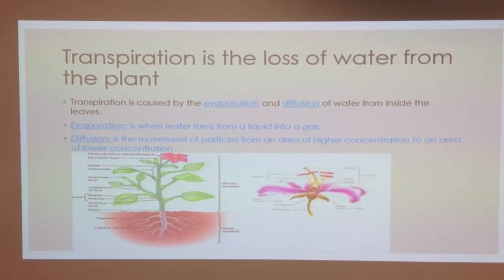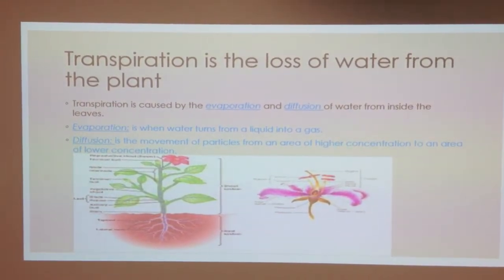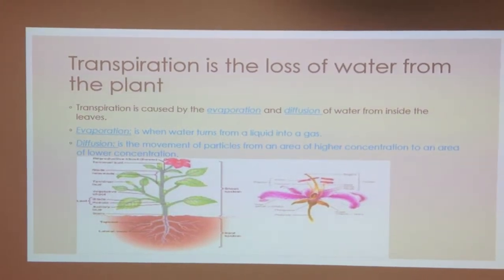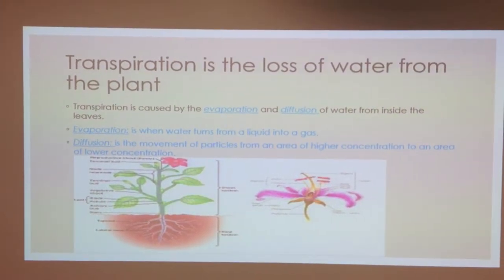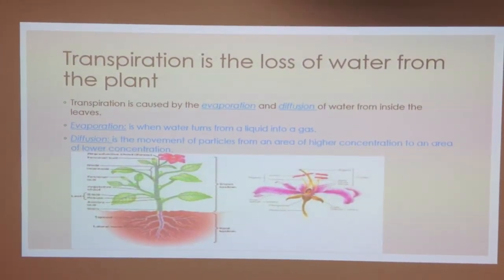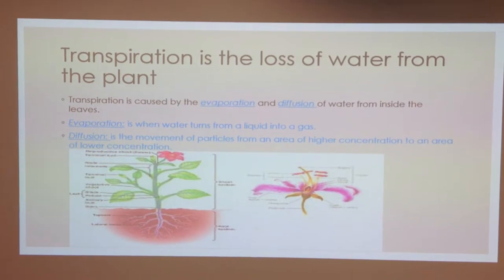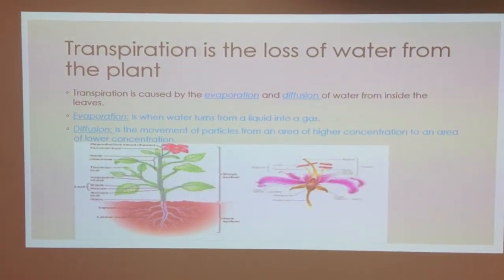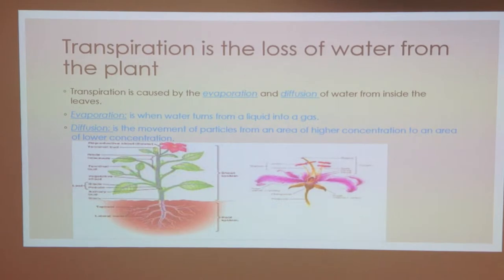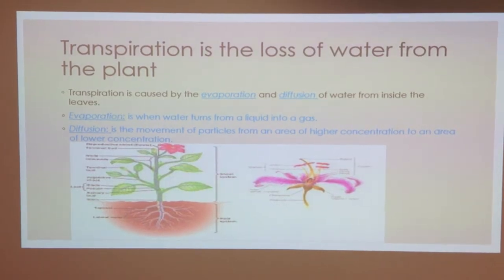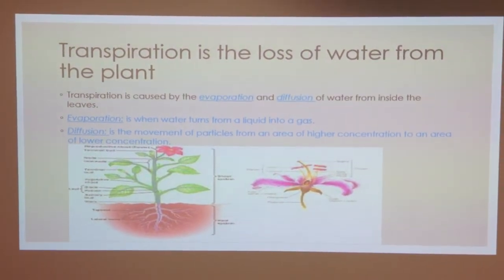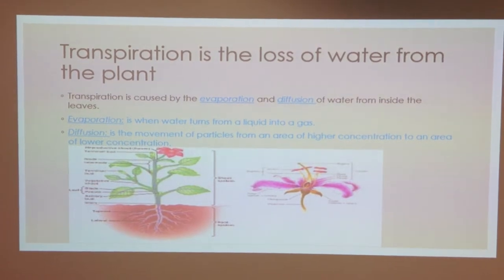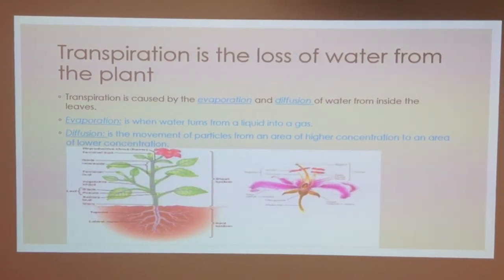Root hairs take in minerals using active transport. Root hairs also absorb minerals from the soil. The concentration of minerals in the soil is usually pretty low, so normal diffusion doesn't work. Instead, a process called active transport is used. Active transport uses energy from respiration to help the plant pull minerals into the root hairs. This happens against the concentration gradient.